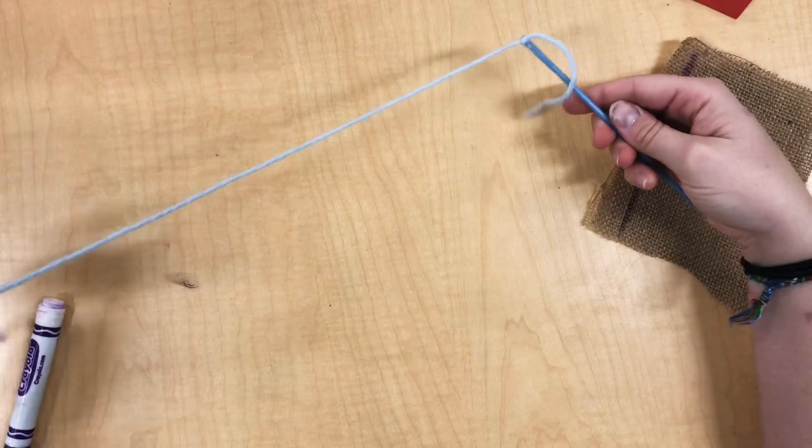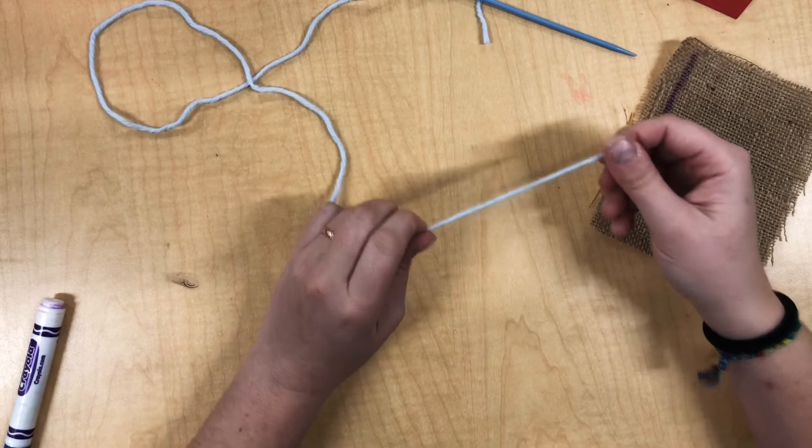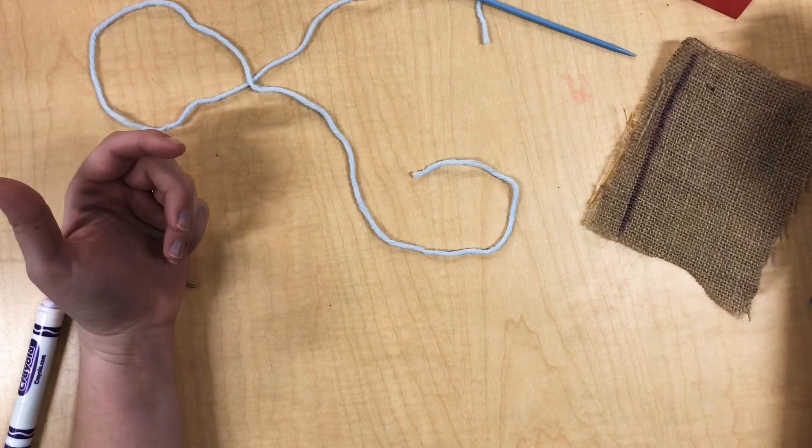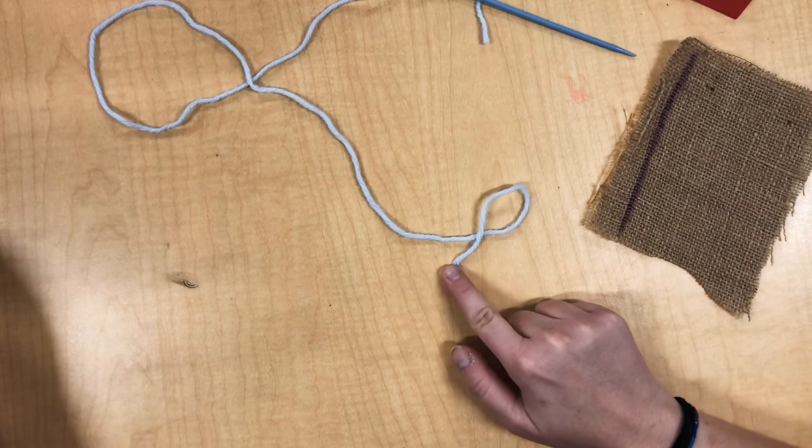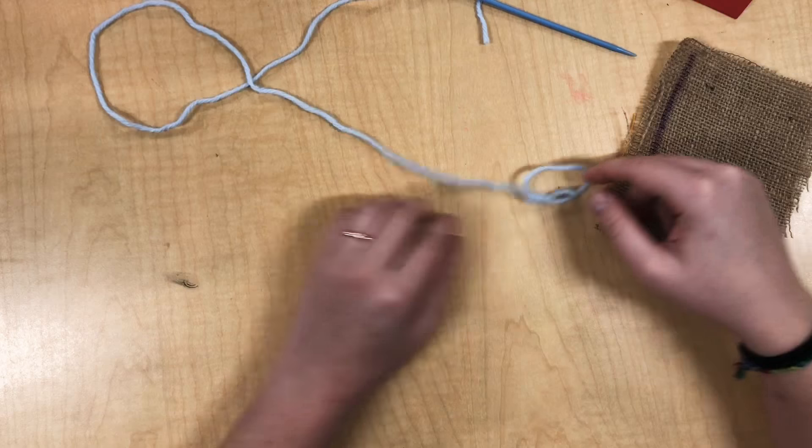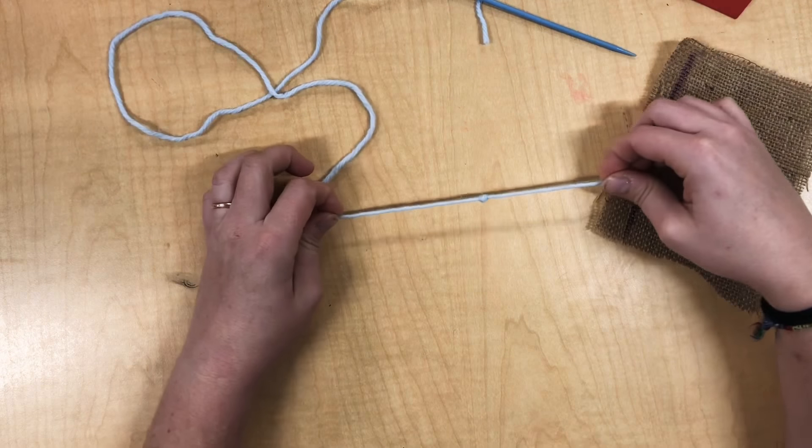Now I've got my needle threaded and knotted, and I've got one more knot I'm gonna tie. At the back of my string, I'm gonna tie another knot. Same way I did with the needle. Make a fish shape, take the tail, go under, then over, pull both sides apart.